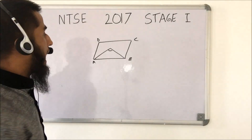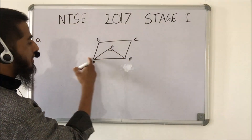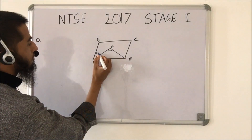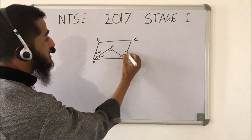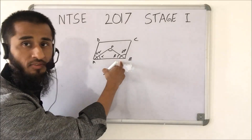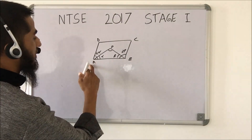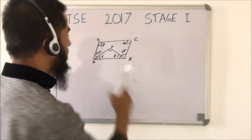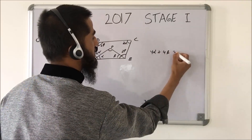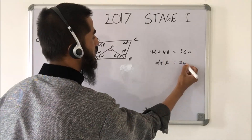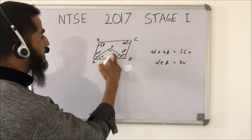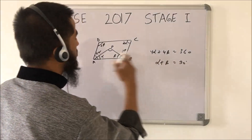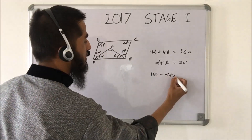A parallelogram is given where AP is the bisector of angle A and BP is the bisector of angle B. We need to find angle APB. Let angle A = 2α, so the bisected angle is α, and let angle B = 2β, so the bisected angle is β. By parallelogram properties, opposite angles are equal, so the four angles sum to 360°: 4α + 4β = 360°, giving α + β = 90°. In triangle APB, α + β + angle APB = 180°, so angle APB = 180° − 90° = 90°.